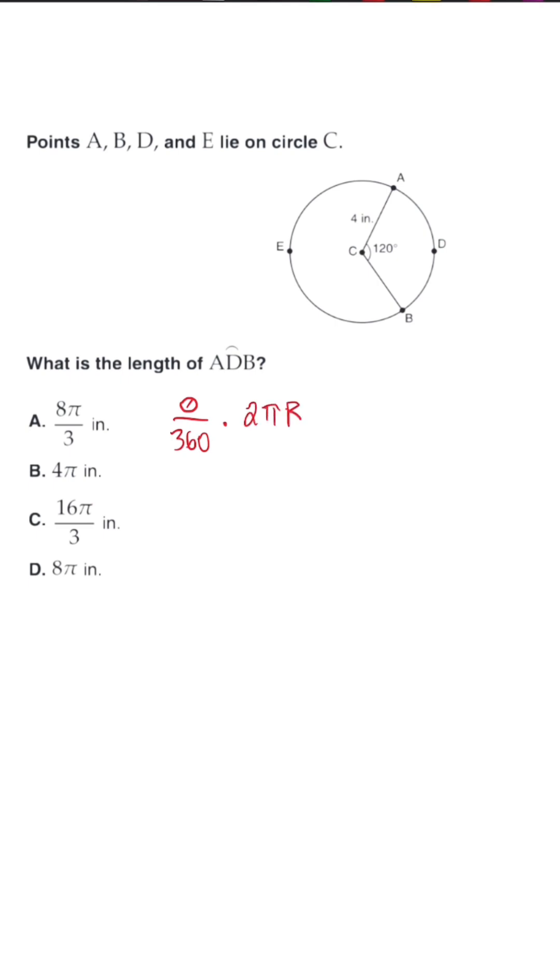So we know in this problem theta is just the degree measure, which is 120, so we're going to put that in there, over 360, and then we're going to multiply by 2 pi, and r we know is 4.